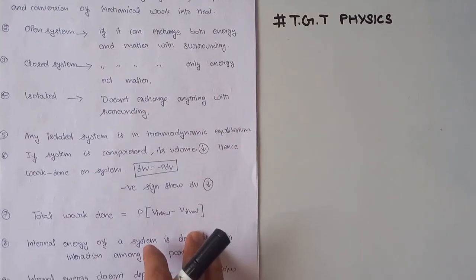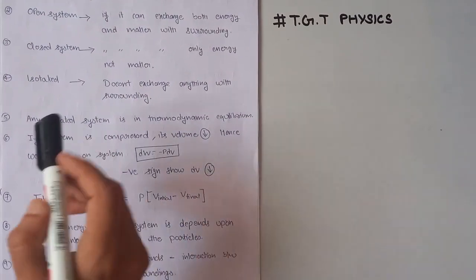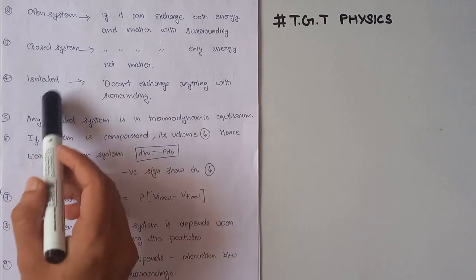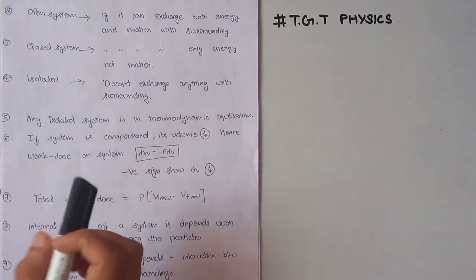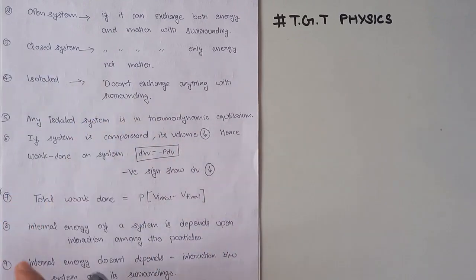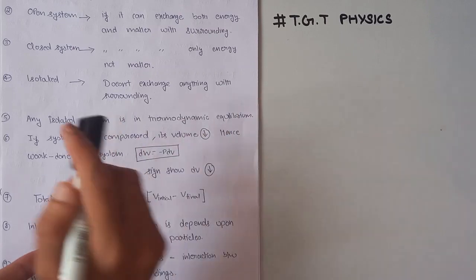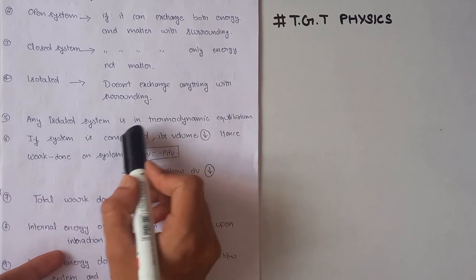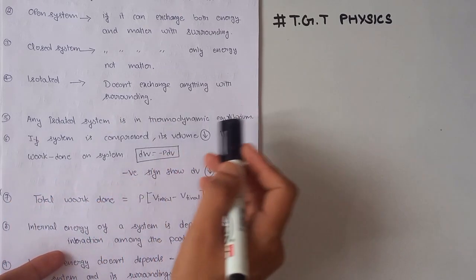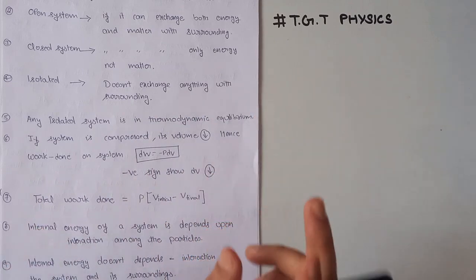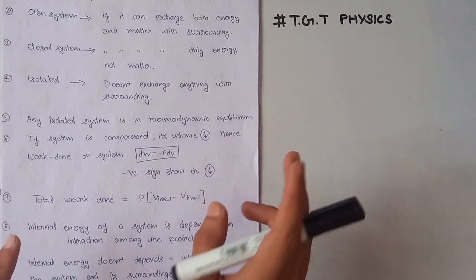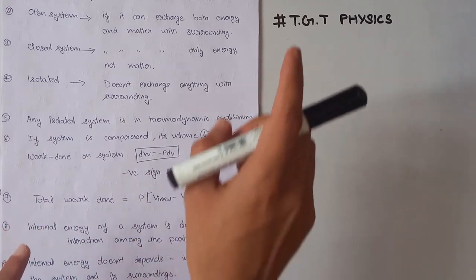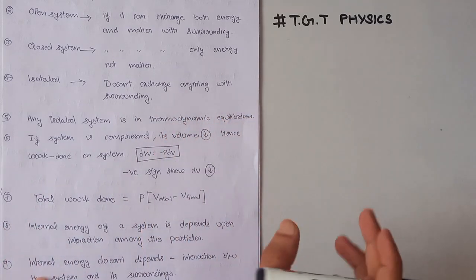Our next important key point is about any isolated system. A system which does not exchange anything — that is, neither matter nor energy — with the surrounding is an isolated system. Any isolated system is always in thermodynamic equilibrium.